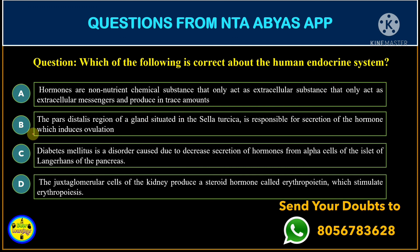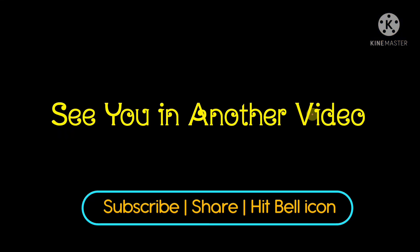Therefore, the correct answer is option B — the pars distalis region of a gland situated in the sella turcica is responsible for secretion of the hormone which induces ovulation. That's all for today. See you in another question. Have a great time!